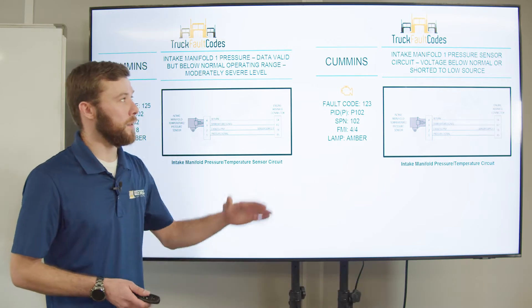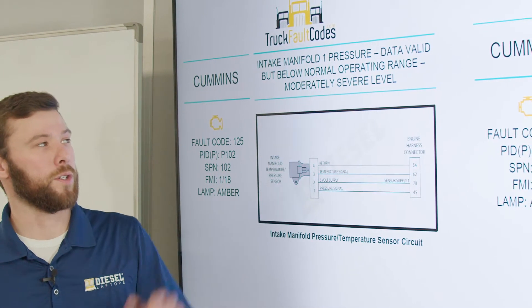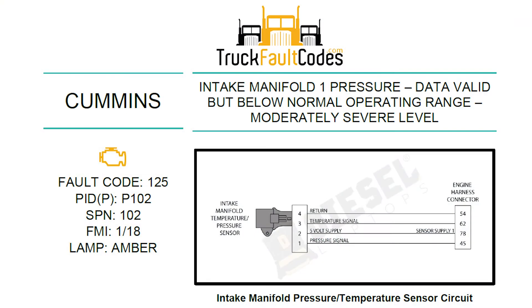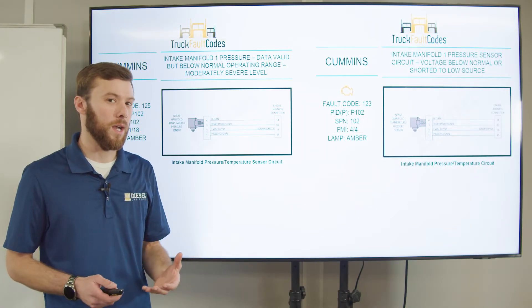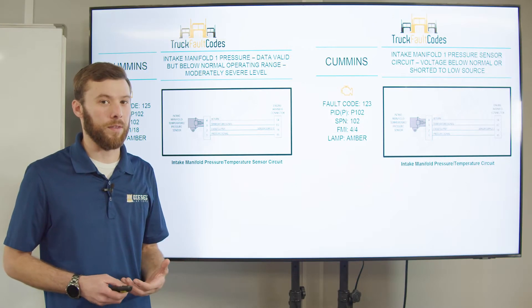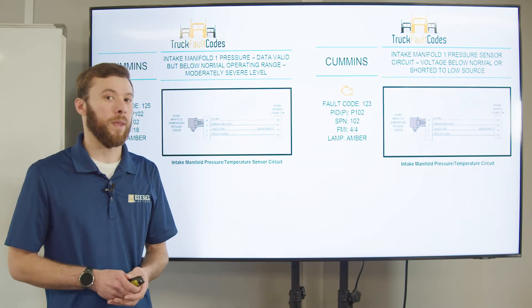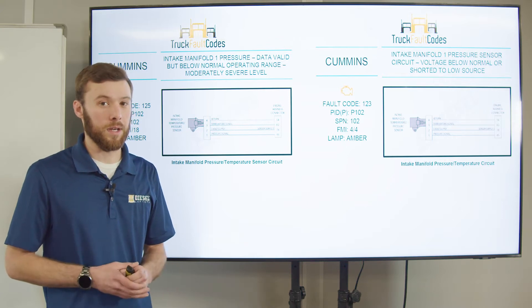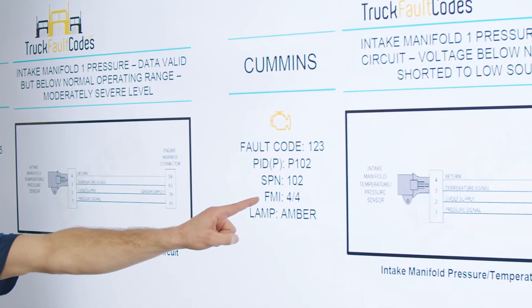To start off here, we're looking at these two fault codes. We can see that they're both for the intake manifold one pressure sensor. One of them says 'data valid but below normal operating range.' The other one says 'voltage below normal or shorted to low source.' So we have two fault codes for the same sensor that are telling us two very different things. One is most likely going to be a mechanical fault; the other is most likely an electrical fault. We can tell that based off of the FMI.